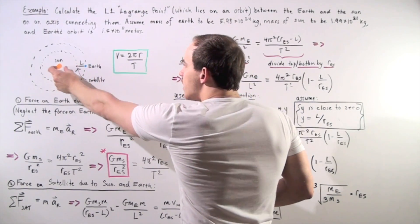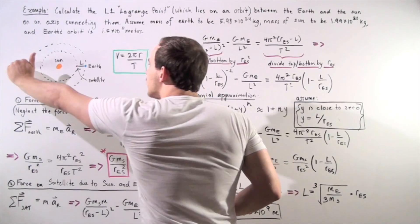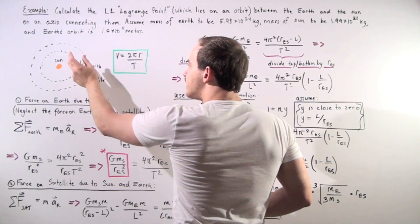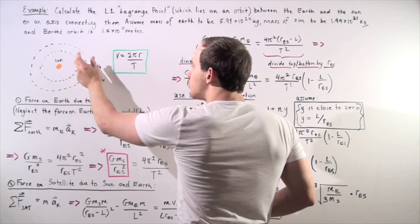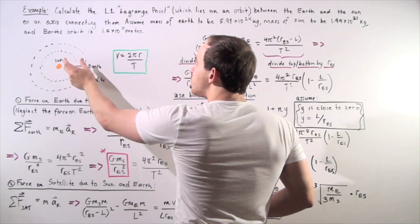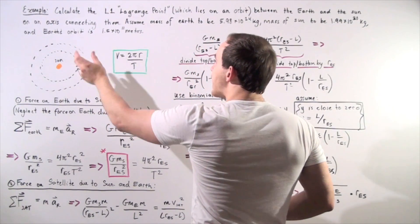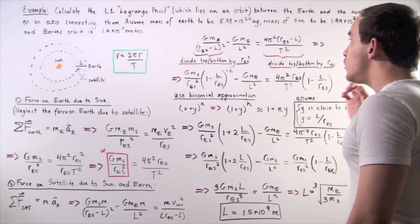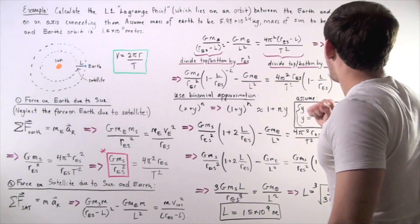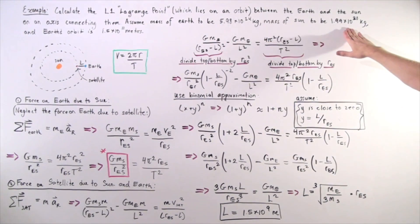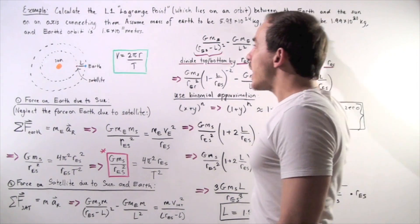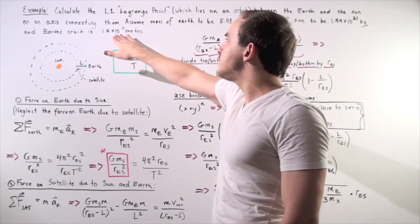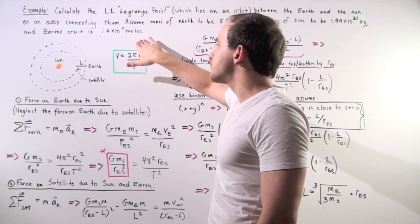So we have the Sun, the satellite, and the Earth all lying on the same axis, and we want to calculate the distance between the satellite and the Earth — our unknown L. Let's suppose we know the mass of the Earth, we know the mass of the Sun, and we also know the radius of the Earth's orbit is 1.5 times 10 to the 11 meters.